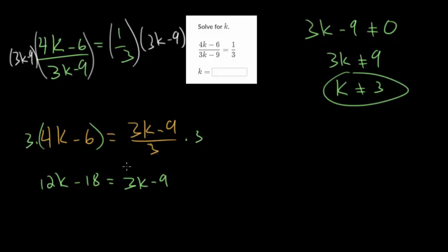So from here, we're just solving a linear equation. Let's subtract 3k on each side. We get 9k minus 18 is negative 9. We'll add 18 to the other side. We get 9k is 9, and then dividing each side by 9, we get that k is 1.